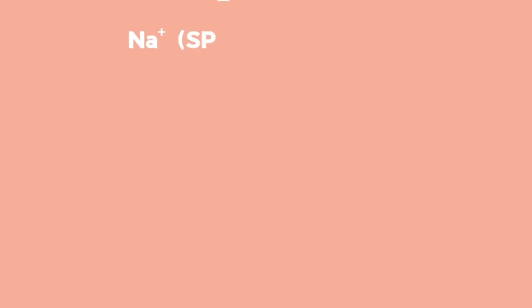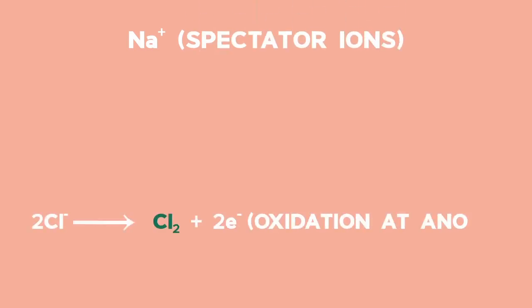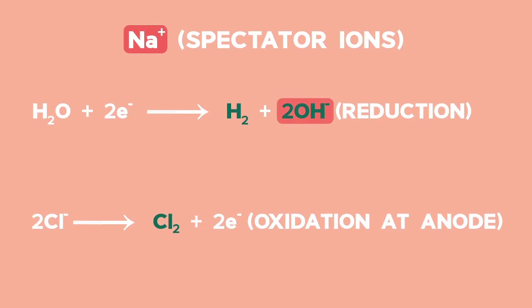We found that the sodium ion is present as a spectator ion and that the chlorine was made at the anode. Hydrogen gas and hydroxide ions are made at the cathode, and even those are actually useful. The sodium ions combine with the hydroxide and make sodium hydroxide.